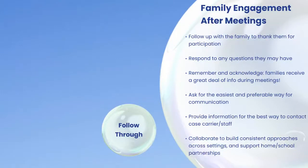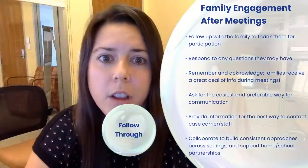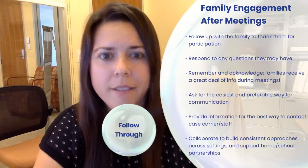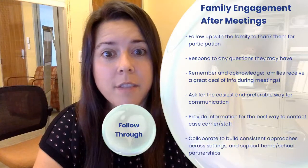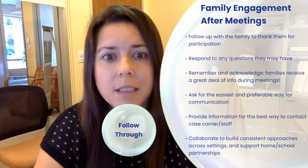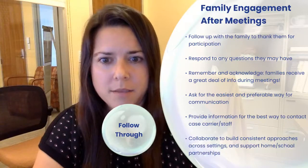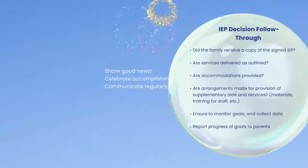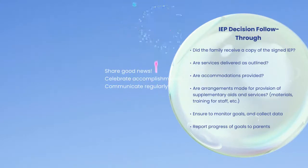After meetings, follow up with the family to thank them for their participation and respond to any questions they might have. Remember, families receive a great deal of information during meetings, so ask for their easiest and preferred way to communicate. Provide information on the best way to contact the case carrier and relevant staff. Staff should collaborate to build consistent approaches across settings and support home and school partnerships. When thinking about follow-through after IEP meetings or decisions, ask yourself key follow-through questions.